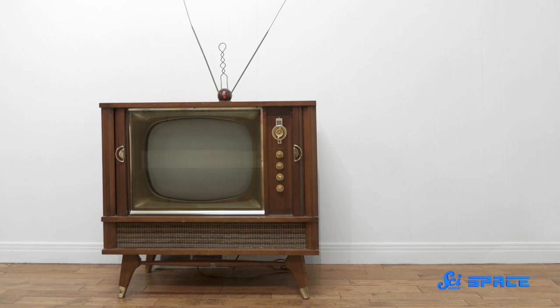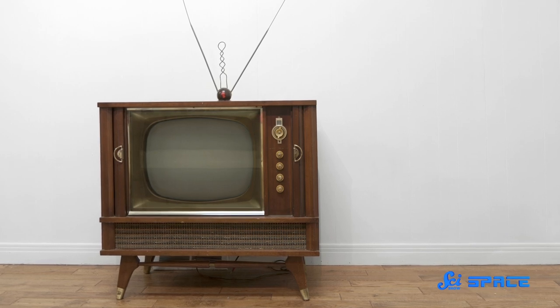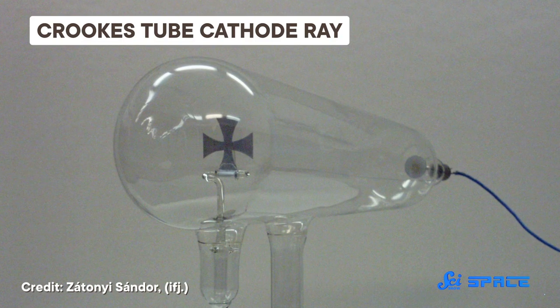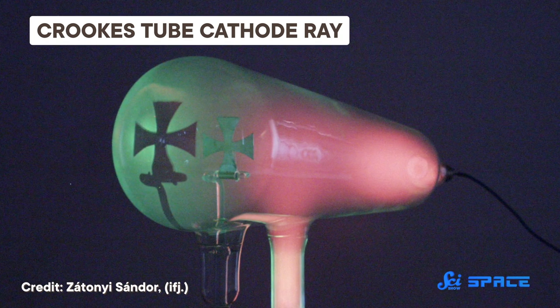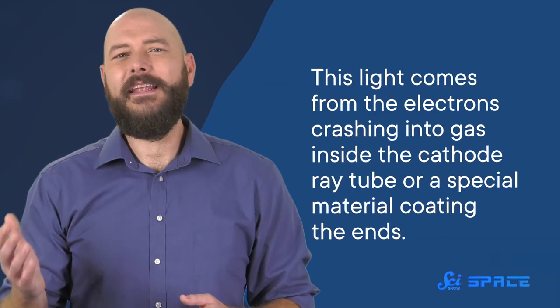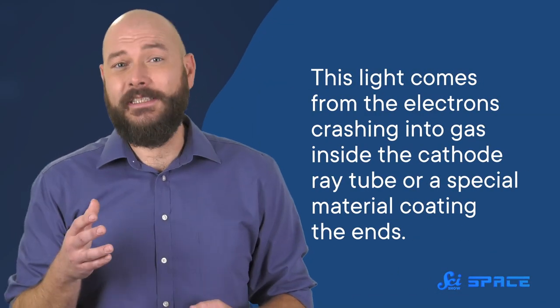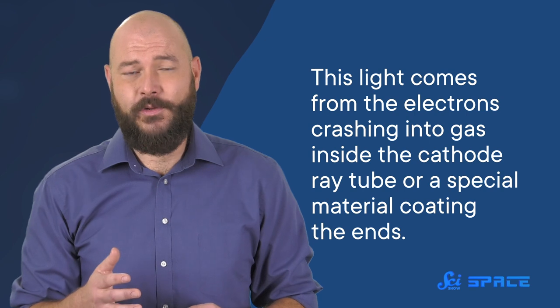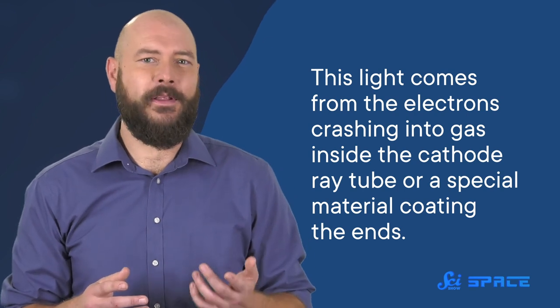Then, six antenna mounted on the outside of the probe transmitted the images to Earth. They were similar to the antenna on old household TVs. A cathode ray, which is made of streams of electrons inside a vacuum tube, produced a bright light that shone through the developed film and onto a super-sensitive detector called a photoelectric multiplier. This light comes from the electrons crashing into gas inside the cathode ray tube, or a special material coating the ends.